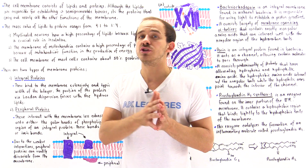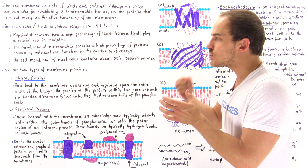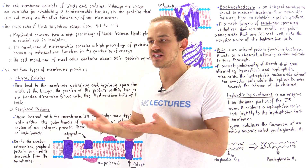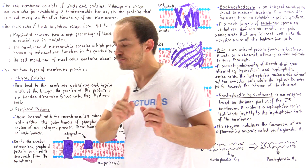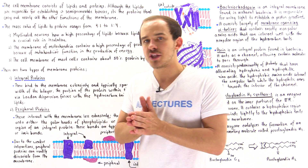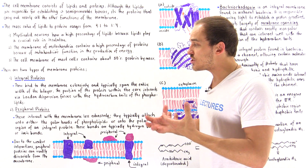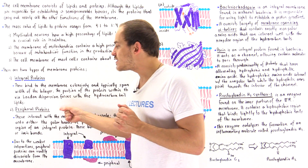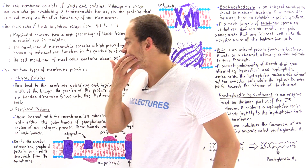Gap junctions do not dissociate from the cell membrane under normal conditions. We actually have to mix these integral proteins with some type of nonpolar solution — for example, a detergent — to actually remove those integral proteins. Peripheral proteins, however, can easily be removed by changing the pH or adding some type of salt solution, because that disrupts the ionic or hydrogen bonds that exist between the peripheral proteins and the cell membrane.